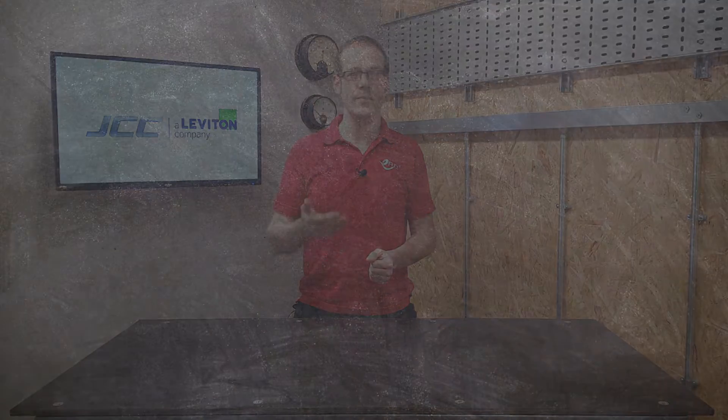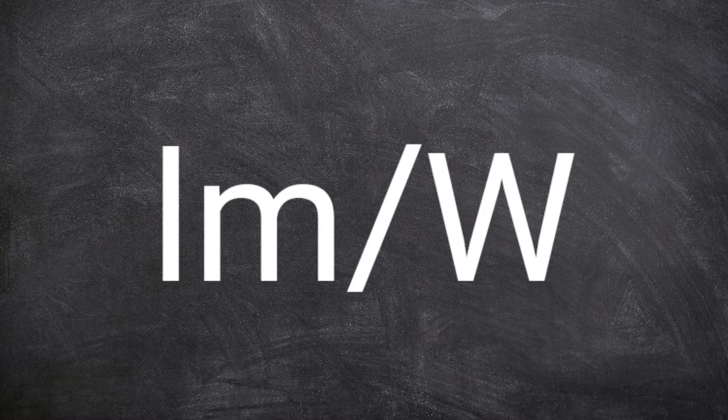Efficacy is simply a way of looking at how effectively a light source turns electricity into light, and it's measured in lumens per watt. It doesn't have its own unit name — although if anyone happens to be watching from the international committee for weights and measures, may I modestly suggest 'the joe' as the unit for efficacy. Not having a specific name actually helps us understand the measurement a little more.